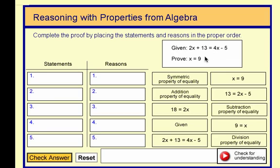I like to think of these statements as the edges of the puzzle. Usually when you're putting together a puzzle, you do the edges first. So I'll put the given statement first, the 2x plus 13 equals 4x minus 5. And the reason is given.